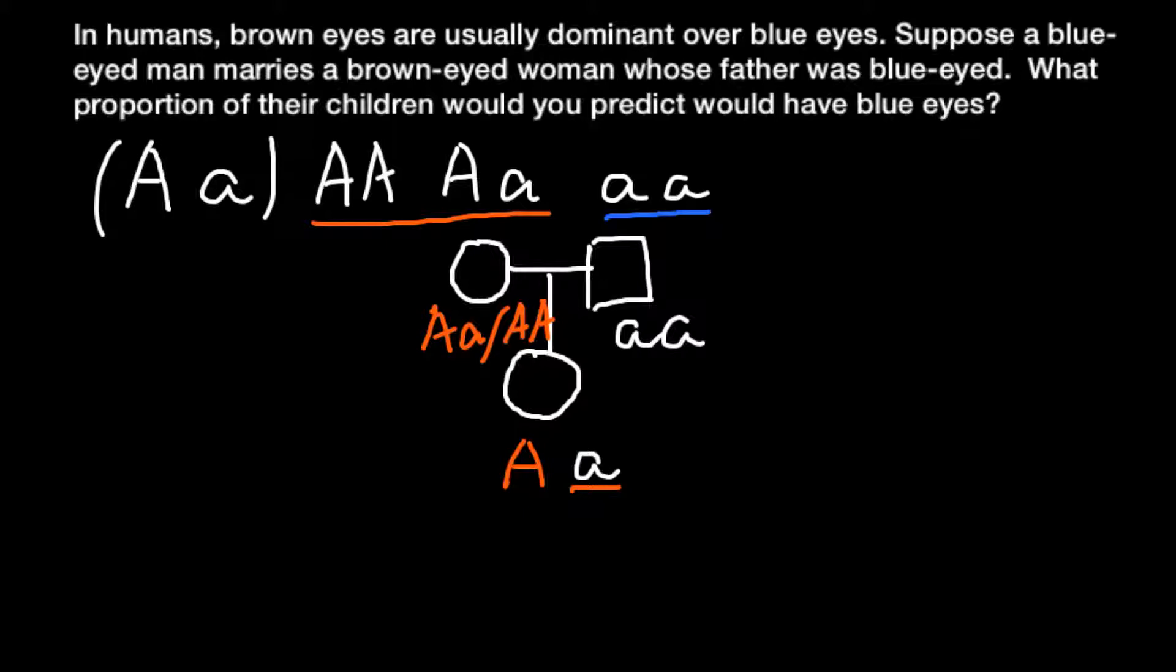We also know that according to our problem, she marries a man whose phenotype would be blue eyes, and that means that genotype is also predictable. It's going to be small a, small a, so only one variant would stand for this phenotype, only one variant of the genotype.